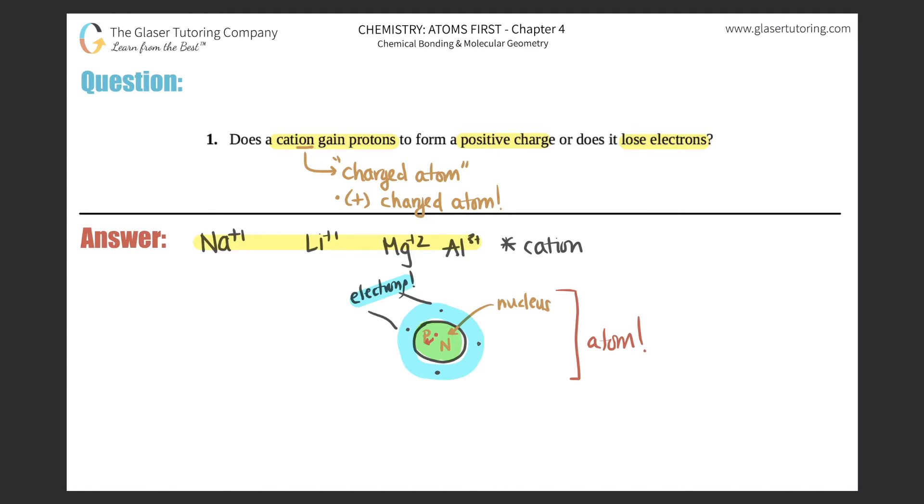You would have to go in the electron cloud, in the nucleus, and grab a proton. That's way too hard. So these plus charges always stem from electrons.